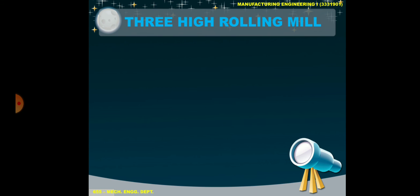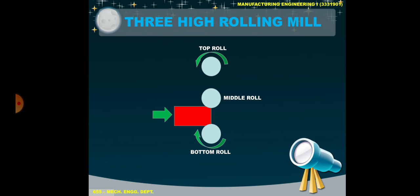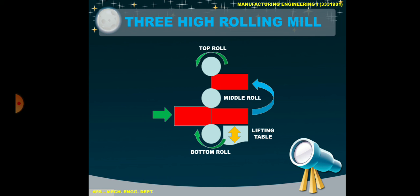Moving on to the 3-high rolling mill. A 3-high rolling mill consists of 3 rollers named as bottom roller, middle roll, and top roll. The bottom roll and top roll rotate in opposite directions. The workpiece passes through the bottom roll and middle roll and reduces its thickness. With the help of a lifting table, it moves upward to the next process. That is the process of how a 3-high rolling mill works.